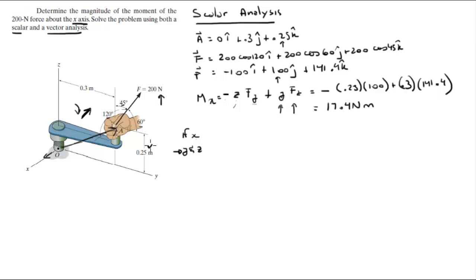So this is the scalar analysis. The vector analysis, which is the one I prefer because it works on more cases and I think it's quicker if you get good at it - the moment about the x is given by the unit vector in the x times the cross product between the vector OA cross F.